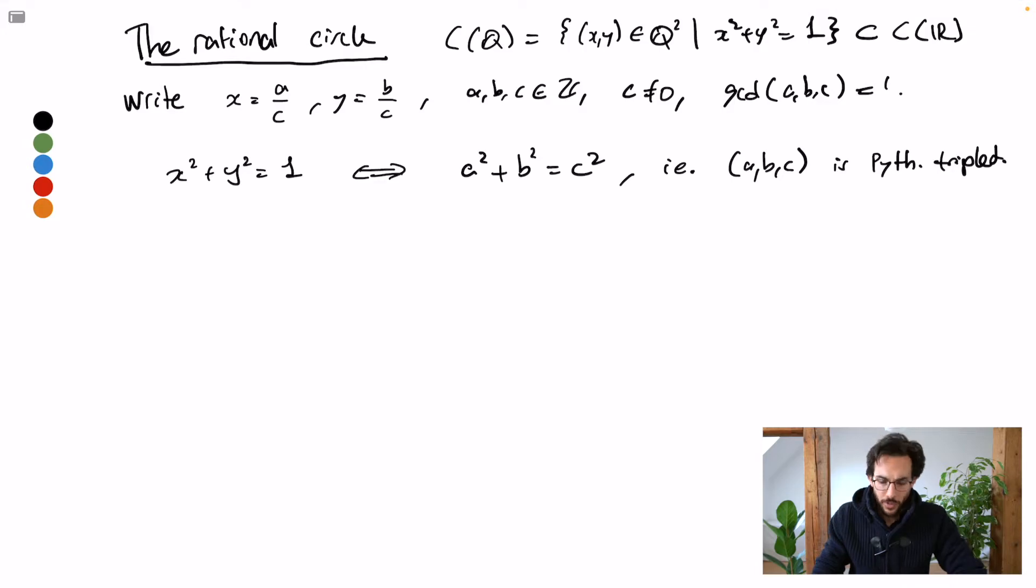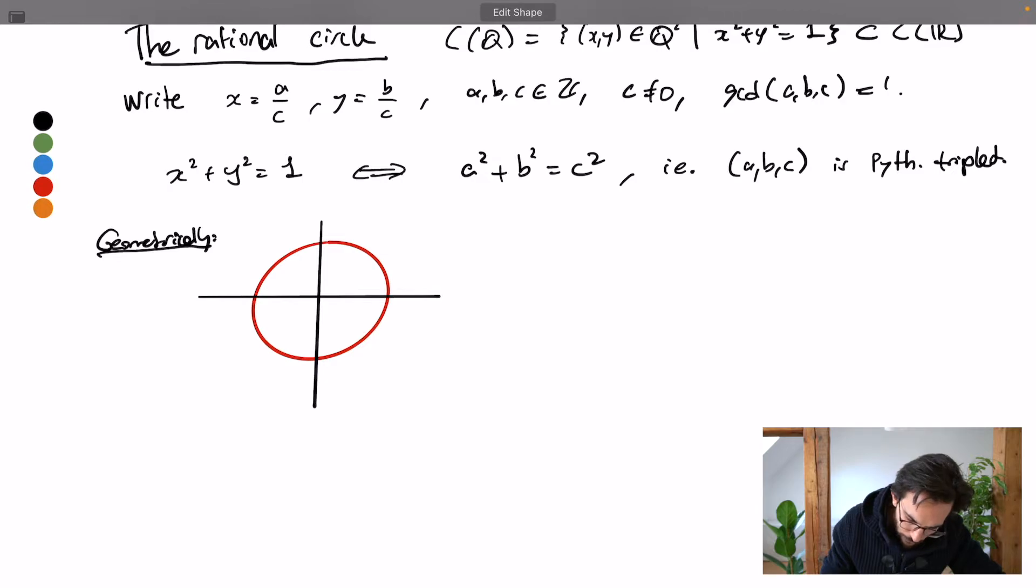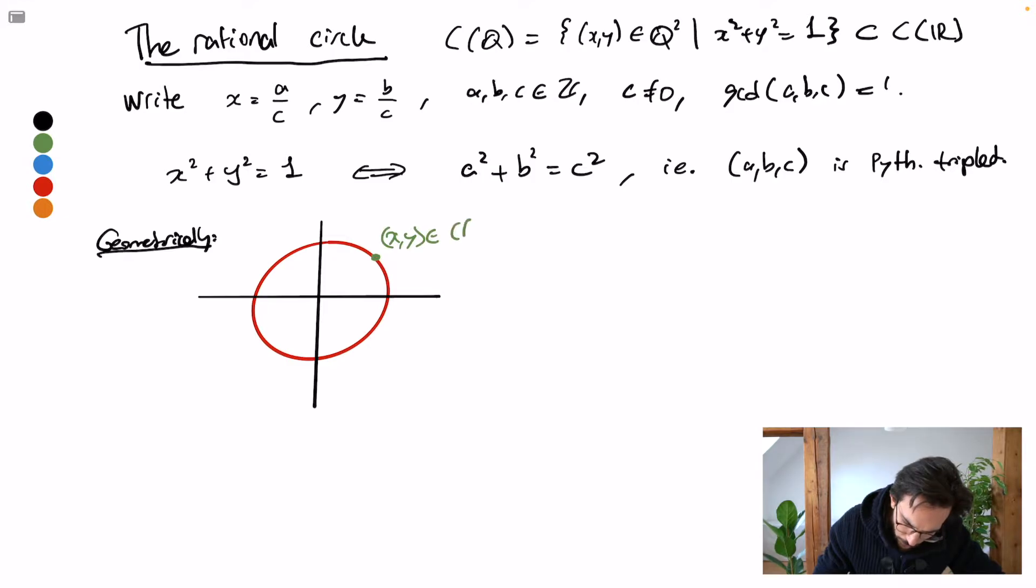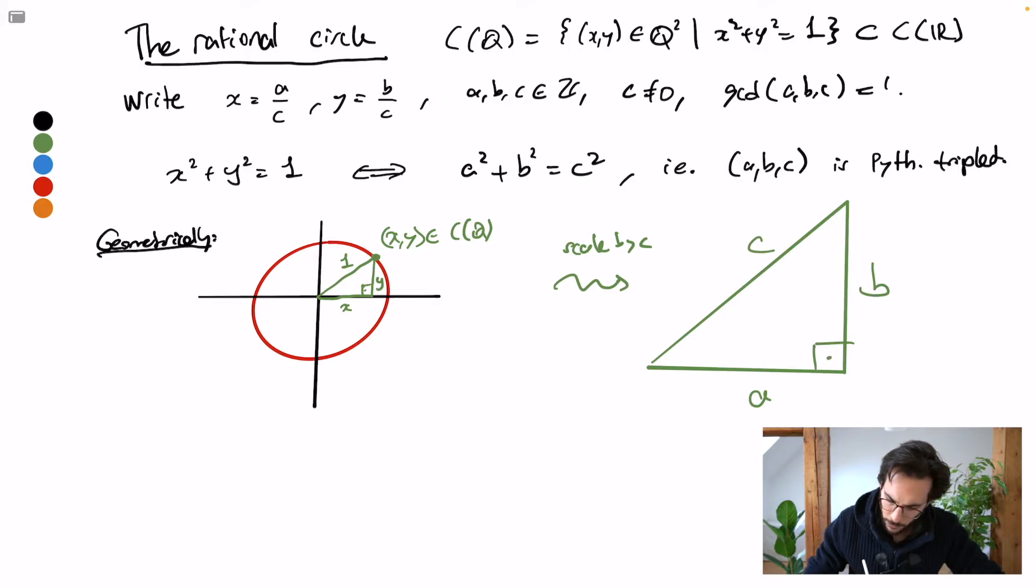Now, geometrically, this is also easy to see. If I were to draw my circle here and take a rational point, then the triangle formed here has edge lengths y, x and 1. After scaling, I get a triangle with edge lengths a, b, c. Of course, this triangle has right angles here. And conversely, I would have to scale by c inverse to go back.